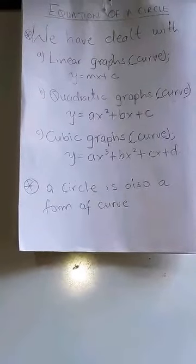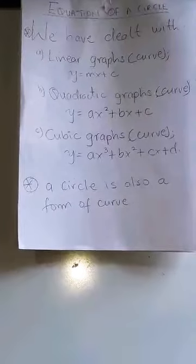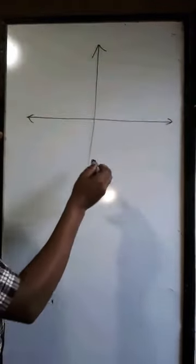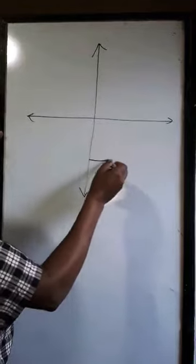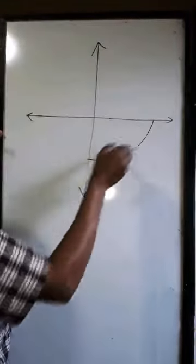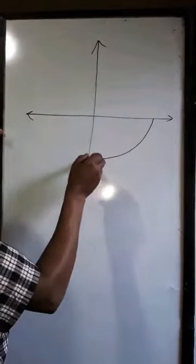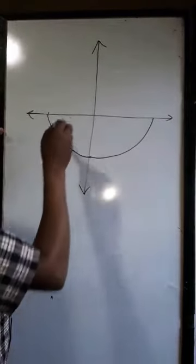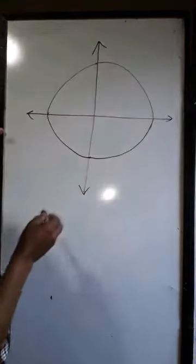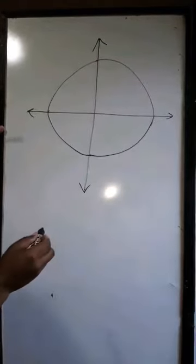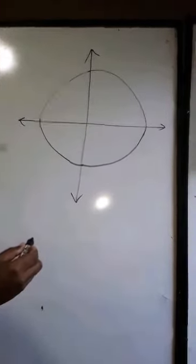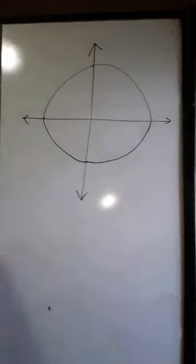Now we want to look at a circle as a curve, because if you look at a circle it is made up of curves. Drawing curves together in succession forms a circle, so a circle is also a curve, and that is what we are going to look at.